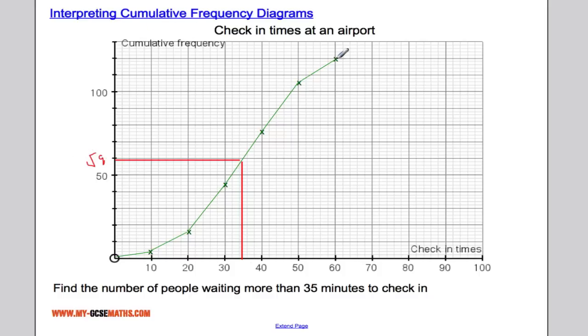I can see from my diagram right up here that the total number of people was 120. So the number of people waiting more than 35 minutes is going to be found by doing 120 take away the 59, and 120 take away 59 gives us 61. So 61 people are waiting more than 35 minutes to check in.